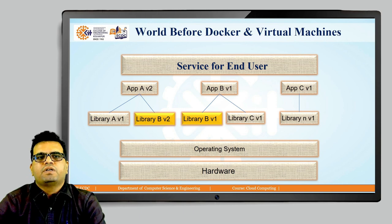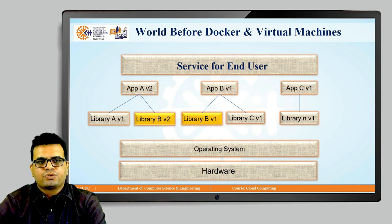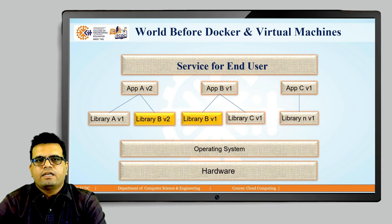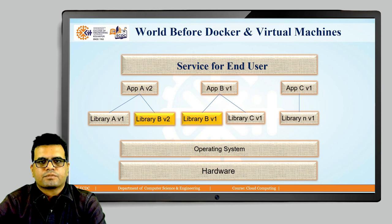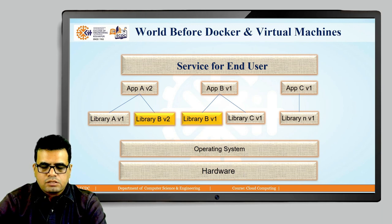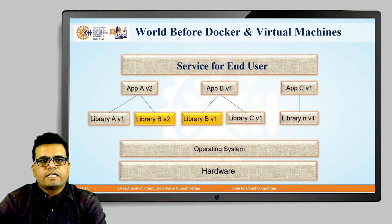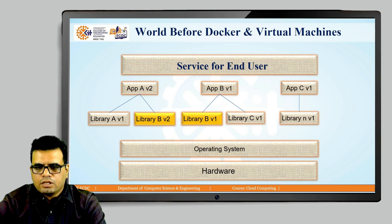With virtual machines, you could run Application A in VM1 and Application B in VM2 to solve this problem. However, virtual machines take a lot of hardware and compute resources from your system to support both applications running simultaneously.